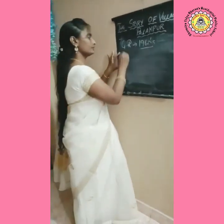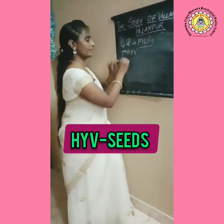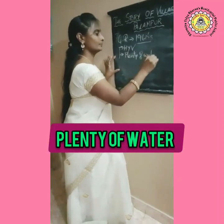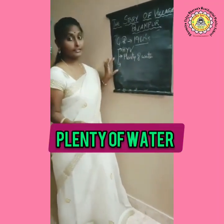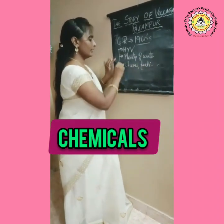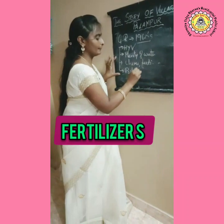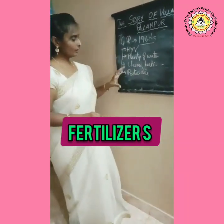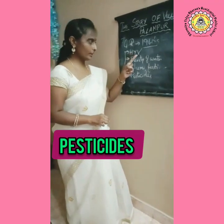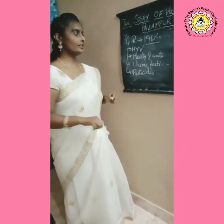So let us see what the Green Revolution involves. How can we increase production? First, by using HYV seeds - High Yielding Variety seeds. These are artificial seeds where every plant is promised a good production. Second, plenty of water is required, because HYV seeds are artificial and not traditional, they require more water. Third, chemical fertilizers are used. Fourth, pesticides are used especially to protect the crop from insects. By using all these things we can increase agricultural production drastically.